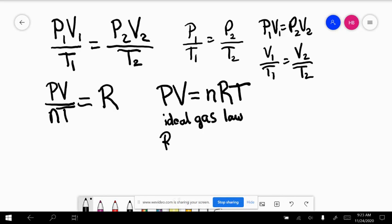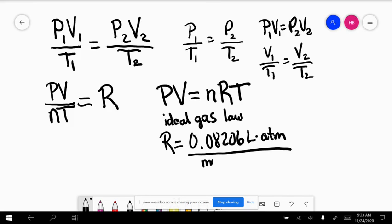In order to use the ideal gas law constant of 0.08206, volume has to be in liters, pressure has to be in atmospheres, the amount has to be in moles, and the temperature has to be in K.